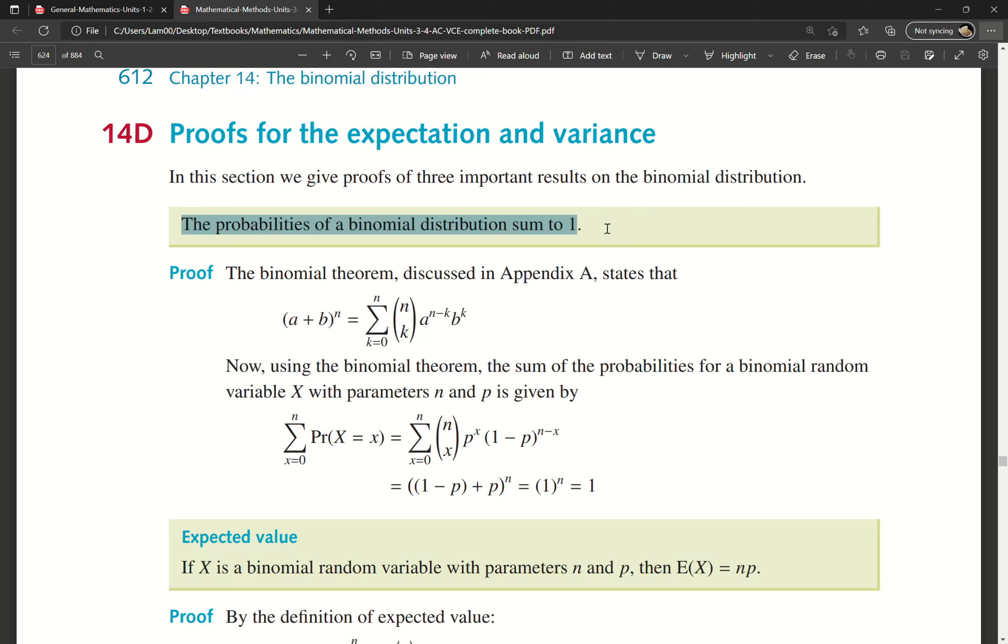The first bit of information is that the probabilities of a binomial distribution sum to 1. We haven't talked about this explicitly, but the binomial theorem, (a + b)^n, states that we have the sum of these values where we have the combination nCk, where a^(n-k) times b^k.